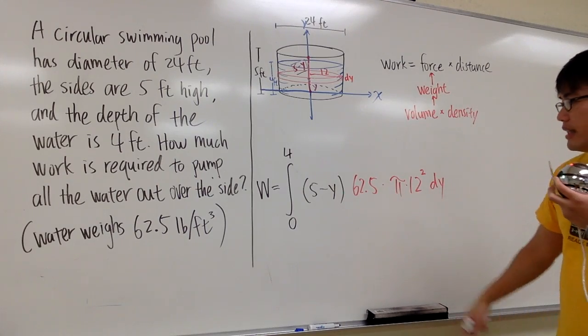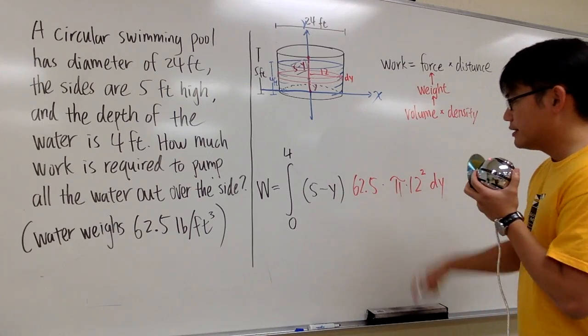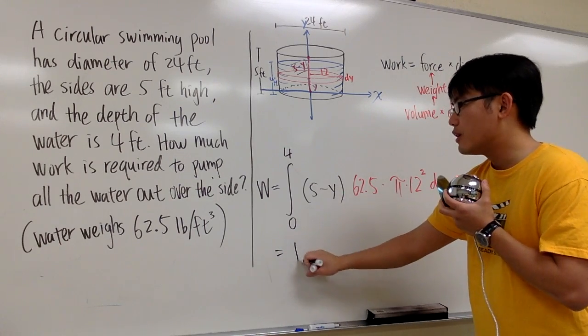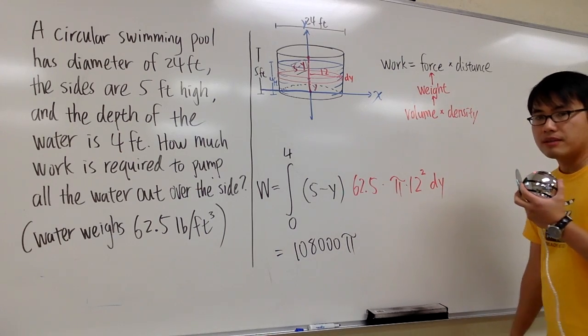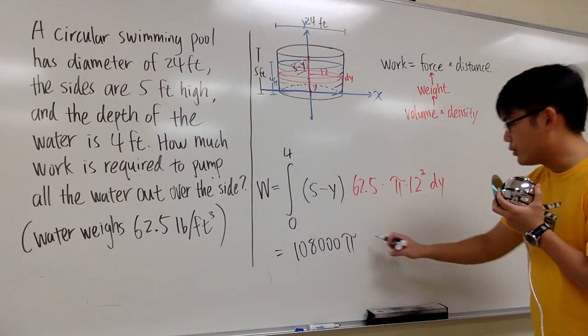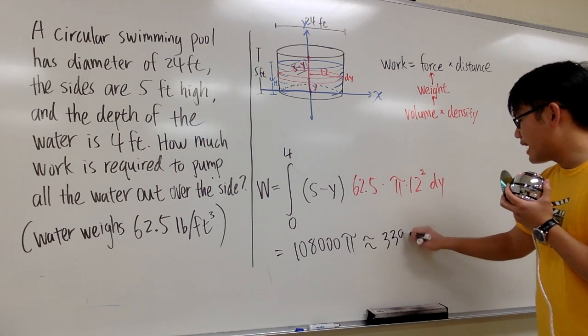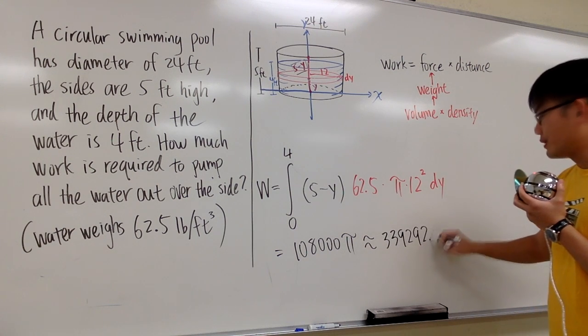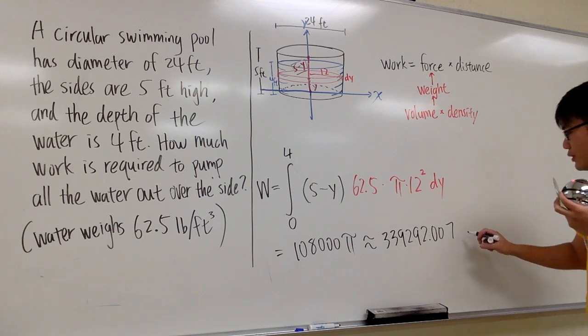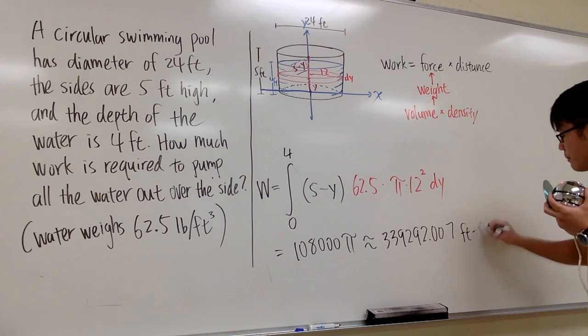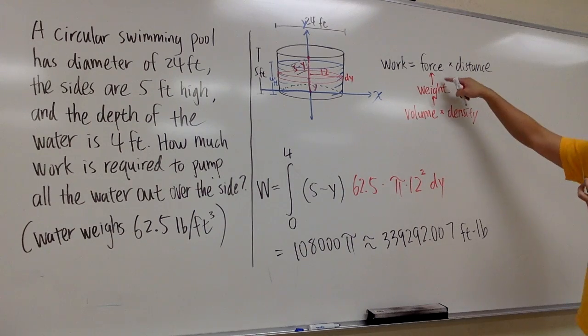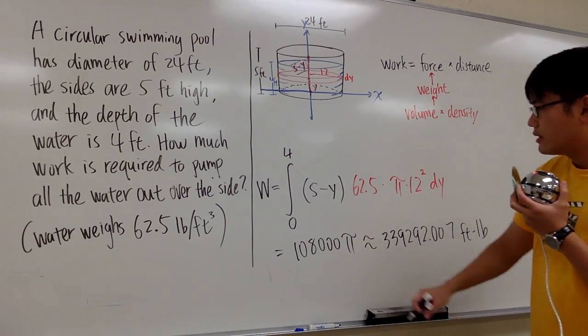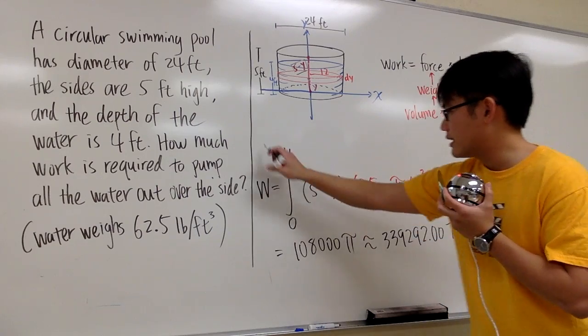And that's how you set up the integral. And then if you calculate this integral, you're going to end up with the answer, 108,000π. If you want to multiply π or not, if you don't, that's the answer. But if you do, this is about 339,292.007. And the unit for this situation is foot-pound. As you can see, foot is for the distance unit, and then pound is pretty much the unit for the weight. That's the answer.